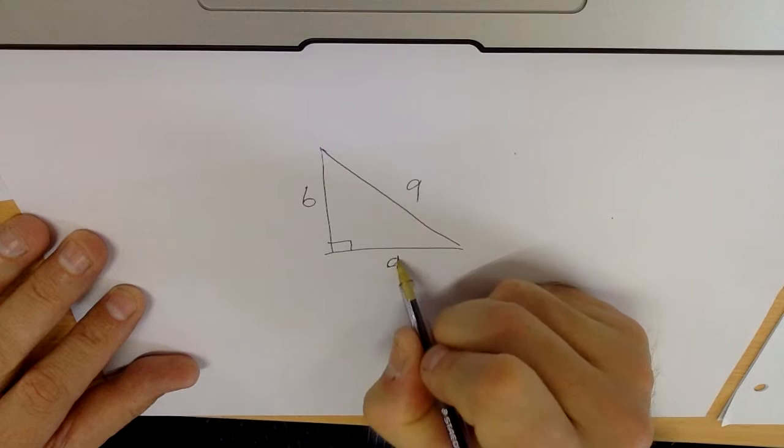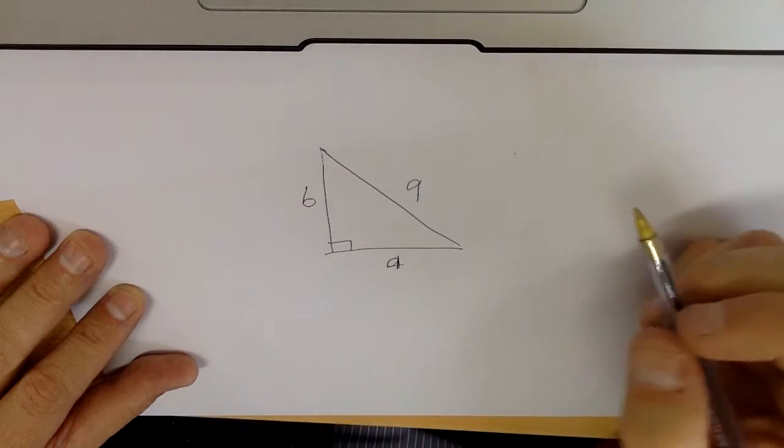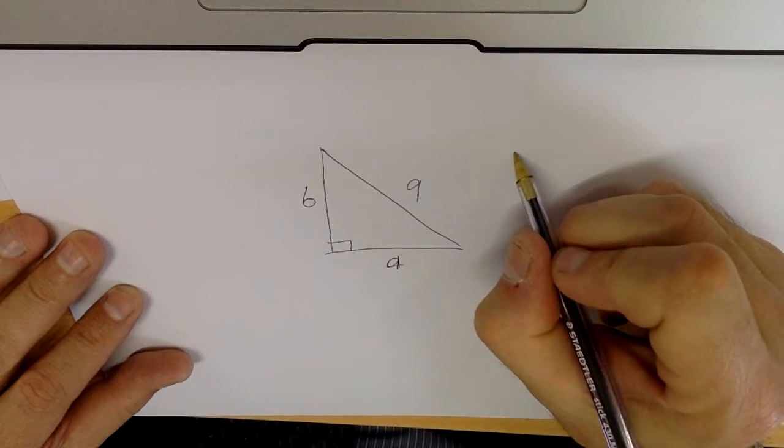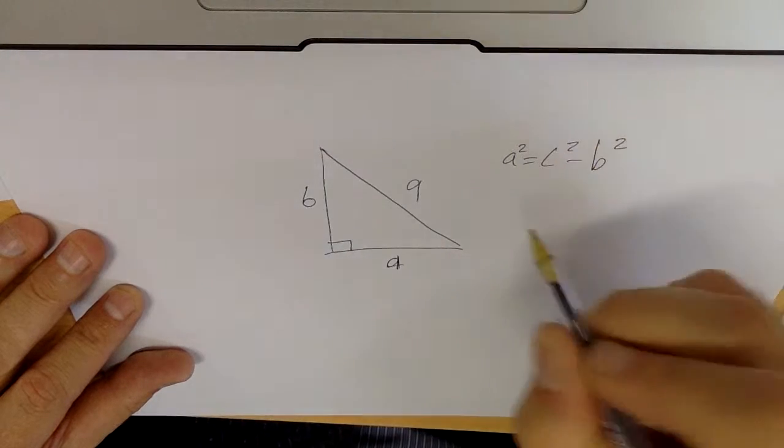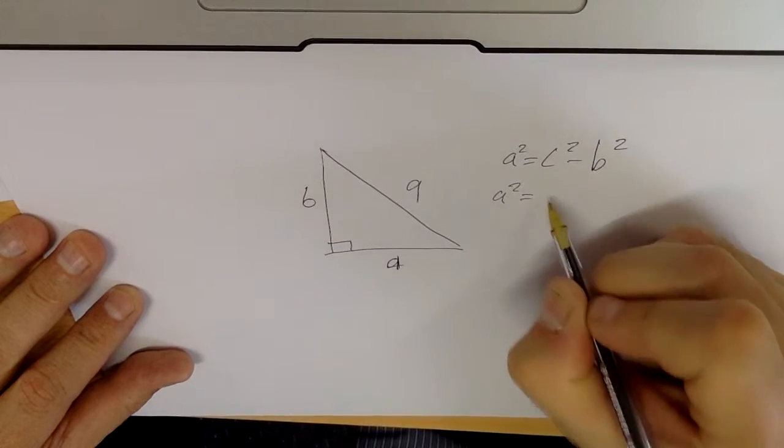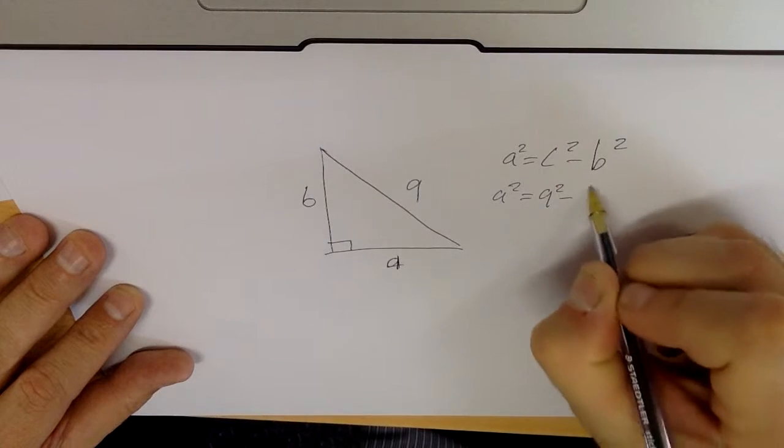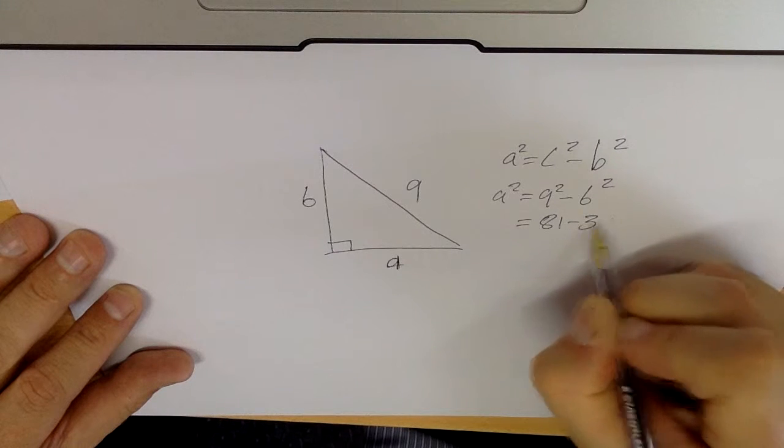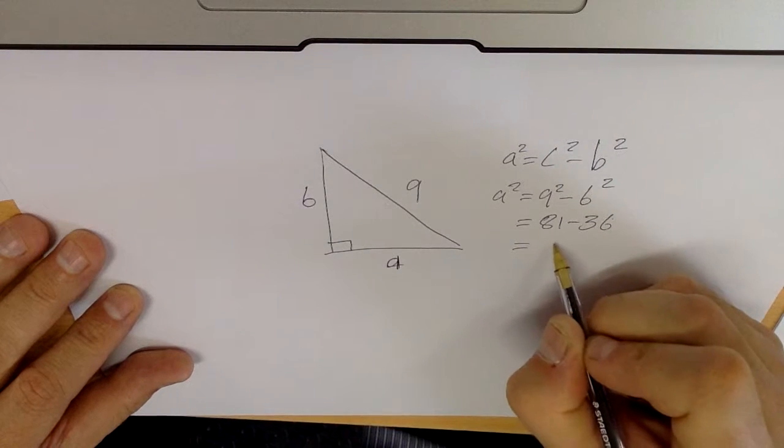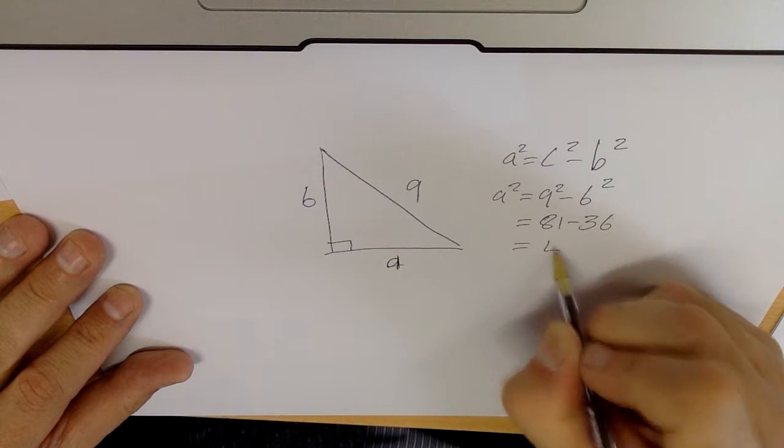Actually I'm going to make that an A because that's a mistake and Tommy found that out. I use the equation A squared equals C squared minus B squared. A squared equals 9 squared minus 6 squared. 9 squared is 81 and 6 squared is 36, and 81 minus 36 is 45.